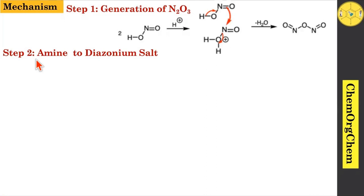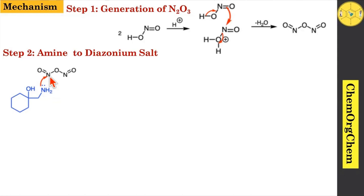The amino alcohol's amine part has a lone pair of electrons which attacks this nitrogen center. Since this nitrogen is attached with two electronegative oxygen atoms, it feels electron deficient. Therefore this nitrogen center attacks here, then followed by kick-off of this part, which produces nitrous acid as a byproduct along with this intermediate.